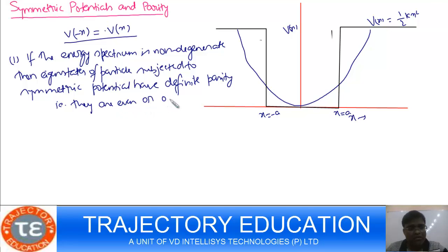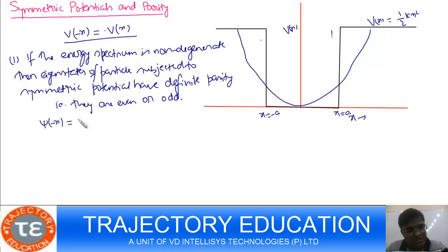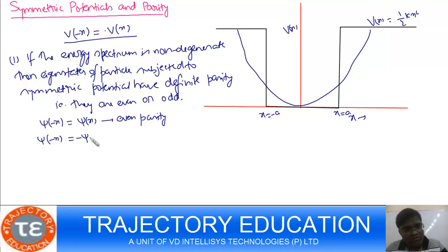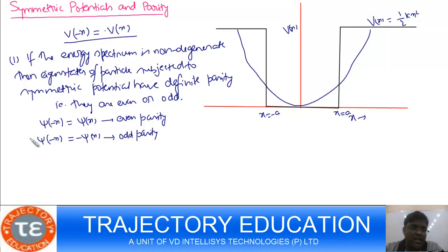The wave function is said to have even parity if Psi(minus x) equals Psi(x). This is called even parity. And if Psi(minus x) equals minus Psi(x), this is called odd parity. So if the potential is symmetric, the wave function will have either even parity or odd parity.